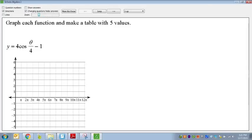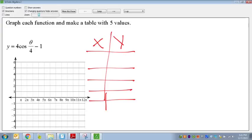Now, notice how the x-axis is in terms of pi, which could happen sometimes, but we can still use that. Let's go ahead and make them decimals. First thing I'm going to do is make a table of values, so x and y.